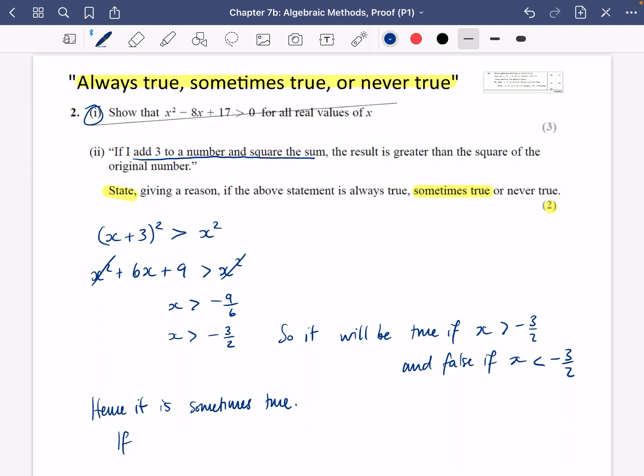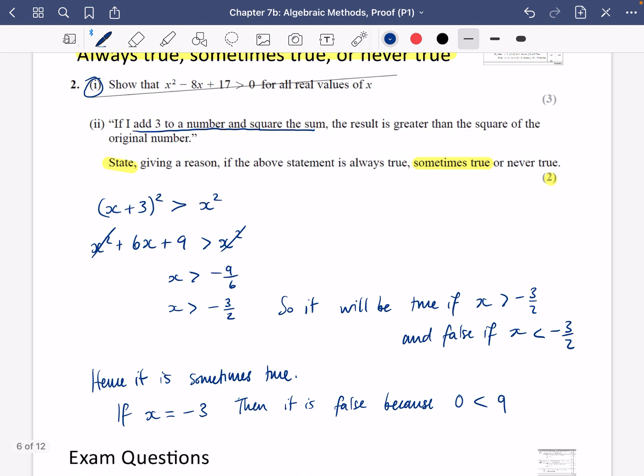You could say if x was equal to, I don't know, minus three, then it is false because zero is less than nine by substituting it in. And then you could say if x was equal to three, then it is true because 36 is greater than nine. You could give examples instead. So this is me doing it in an algebraic way, and this is just using examples. So for these always true, sometimes true, or never true, just find a couple of examples where it will work, or you can try and use some kind of algebraic explanations like I did in the first half.